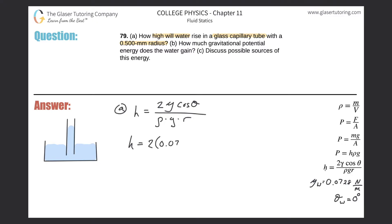The height equals 2 multiplied by the surface tension of 0.0728, then multiplied by cosine of the contact angle of water and glass, which is zero degrees. That's divided by the density of water — 1000 — multiplied by gravity, 9.8, multiplied by the radius of the tube. The radius is given in millimeters so we divide by 1000 to convert to meters. Cosine of zero is just 1, so we proceed directly to dividing: 2 × 0.0728 divided by 1000 × 9.8 × (0.5/1000).